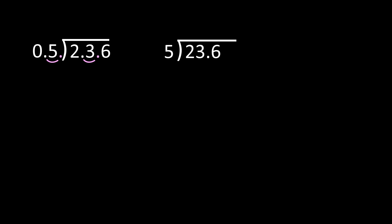The next step is to bring that decimal in your dividend straight up so it's in the correct place in your quotient. Now we're going to divide, and I can't divide 2 by 5, so I'm going to be dividing 23 by 5. 23 divided by 5 is 4. 4 times 5 is 20. Then we're going to subtract — 23 minus 20 is 3. So once you take care of your decimals, you're going to be dividing like normal.